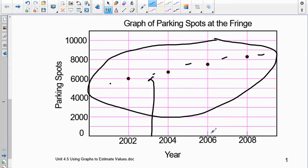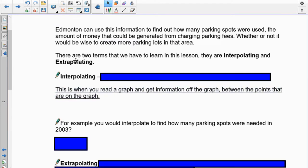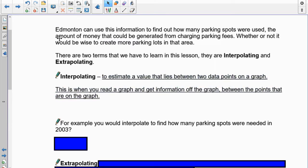that's what interpolation is. So we could find out any information along this pathway. So if you want to know what happened in 2003, you could use it. 2009, possibly 2010. These are all what we call interpolations. This is when you regraph and get information off the graph between the points that are on that graph.